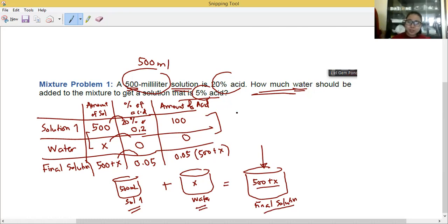What's the amount of acid for solution 1? We have 100. How about for the second? We have 0. And what is the final solution? It's 0.05 times 500 plus x.